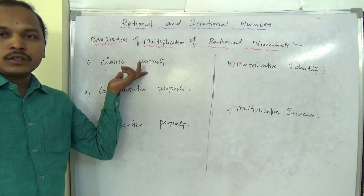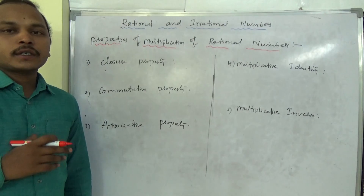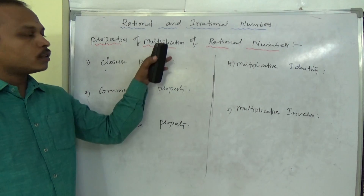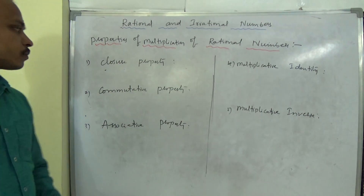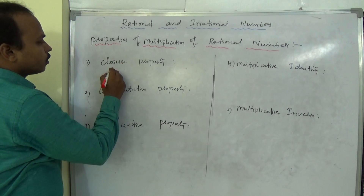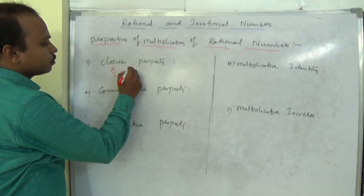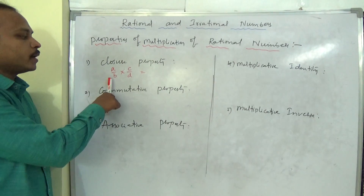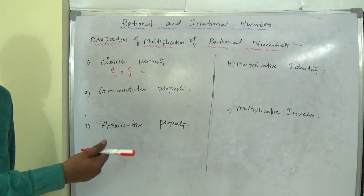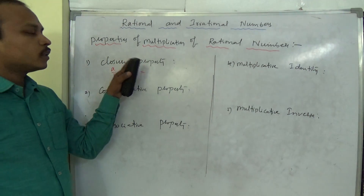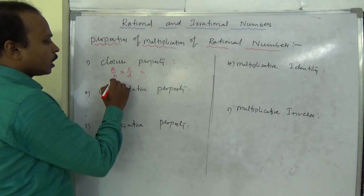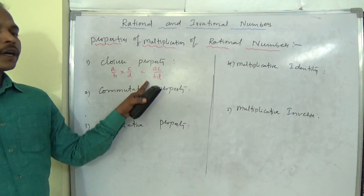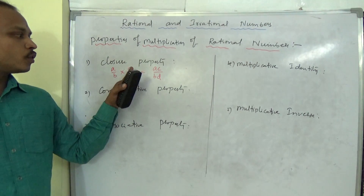First, we will see the closure property. What closure property says — we have seen this in the previous topic on addition of rational numbers, and the same properties will exist for multiplication also. For any two rational numbers a/b and c/d, if I multiply them, the result a×c / b×d is also a rational number. So closure property exists.